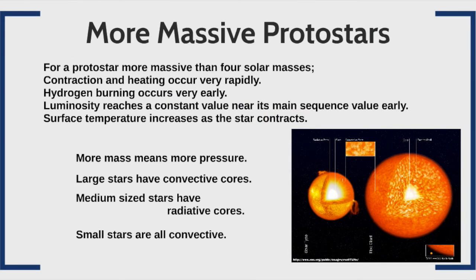For more massive protostars — stars much larger than our Sun — if a protostar is approximately four solar masses, contraction and heating occur very rapidly, so hydrogen burning occurs much more rapidly than in smaller stars like our Sun. More massive stars have more pressure and therefore have convective cores. Medium-sized stars like our Sun have radiative cores with convective surfaces, and small stars are all convective, carrying all of their energy to the surface by convection.